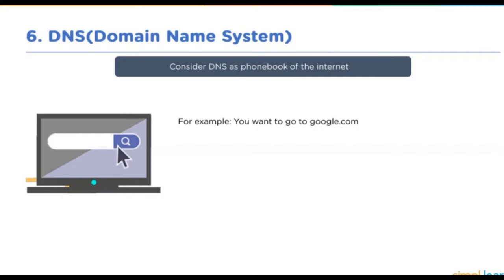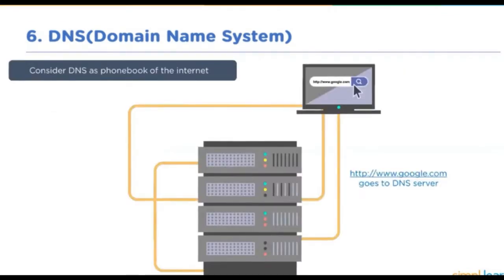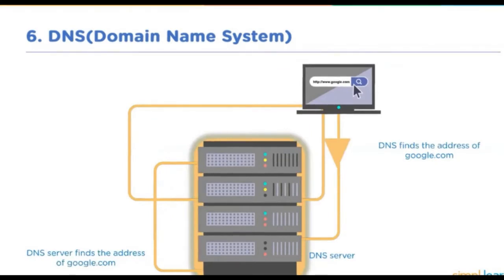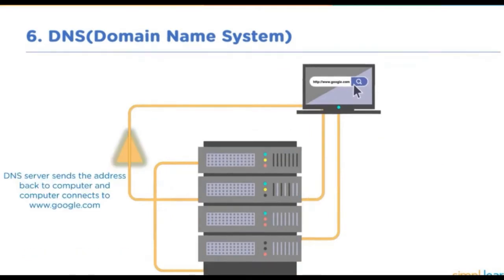For example, if you want to browse google.com, type google.com in the browser URL. This request goes to a DNS server. The DNS server finds the IP address of google.com, sends the IP address back to the computer, and the computer connects to google.com using the IP address.